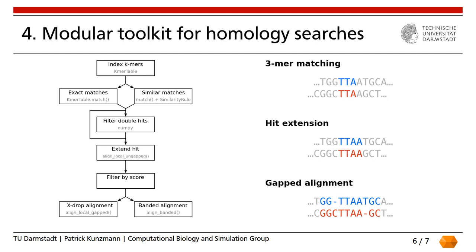Last but not least, Biotite has got a modular construction kit for heuristic homology searches, following the example of BLAST and similar software. Most of these programs implement very similar steps to find and align similar sequences from a large database to a given query sequence. In brief, we have a fast k-mer matching process between the query and the database sequences, an un-gapped extension at the hit position, and finally a time-consuming local gapped alignment. Between these steps, only the most promising hits are filtered and considered in the next step. Biotite provides classes and functions to perform each of these steps in an easy manner.